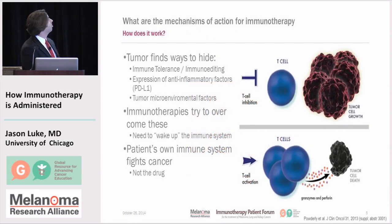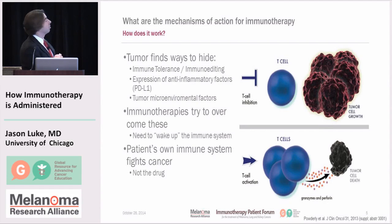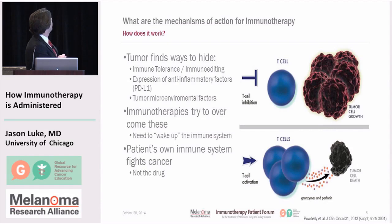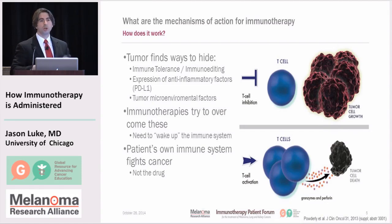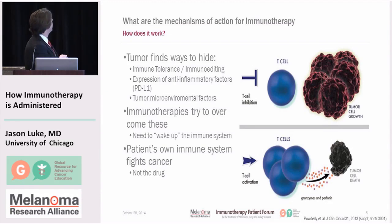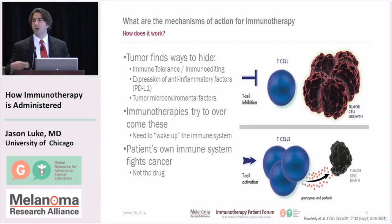So what are the mechanisms of action for immunotherapy? As we talked about, the tumor finds ways to hide inside your body. They find ways to get the immune system to sort of stop attacking it. That's through that immuno-editing approach, in which the tumor will grow and parts of the tumor can be killed, stay in equilibrium, and then start to grow. It can express factors that can confuse the immune system into not recognizing that the tumor is not supposed to be there.